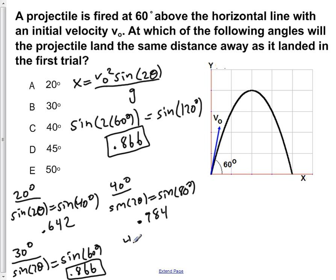If we now do 45 degrees we get sine of 2 theta is equal to the sine of 90 degrees, which gives us a value of 1.